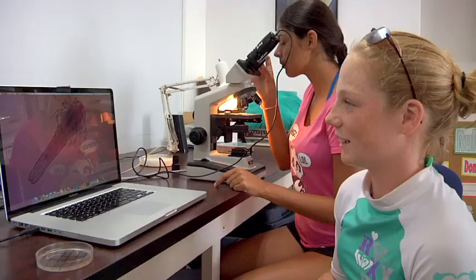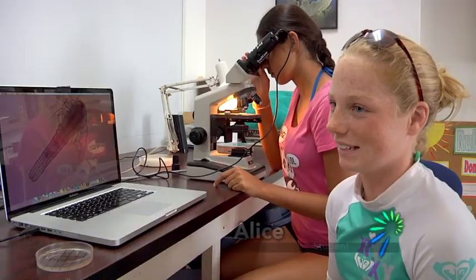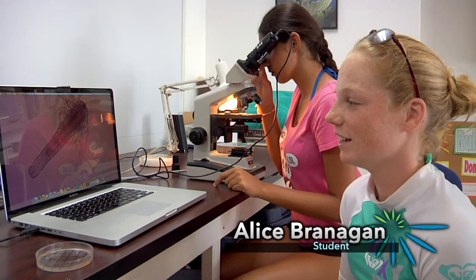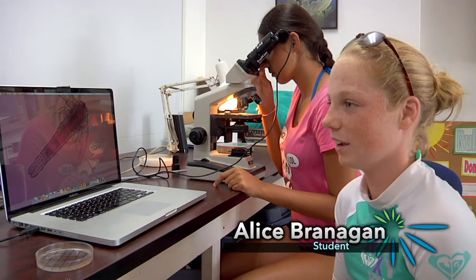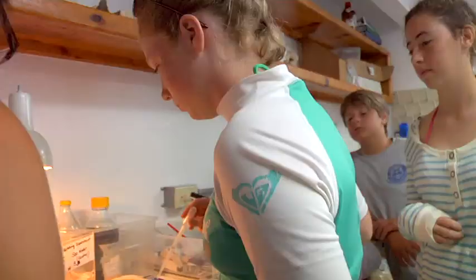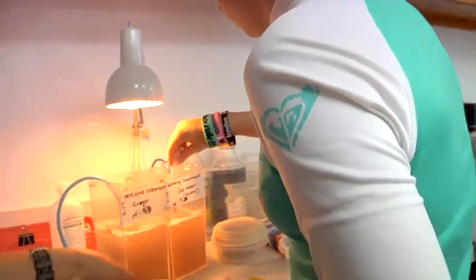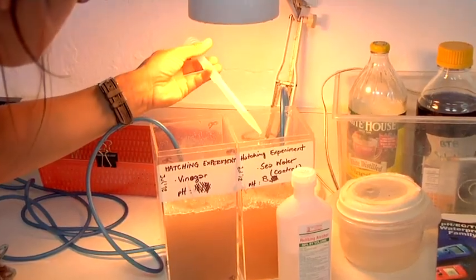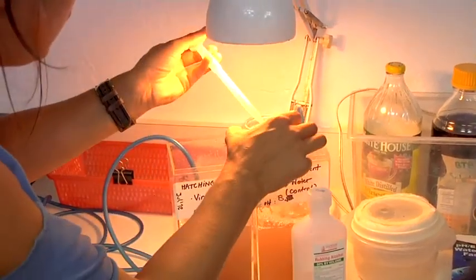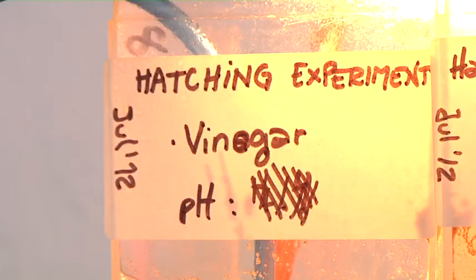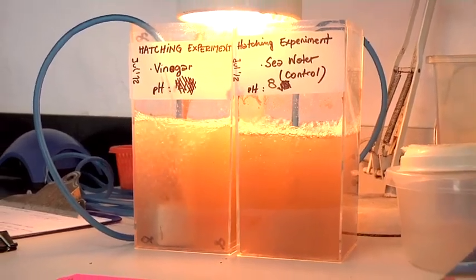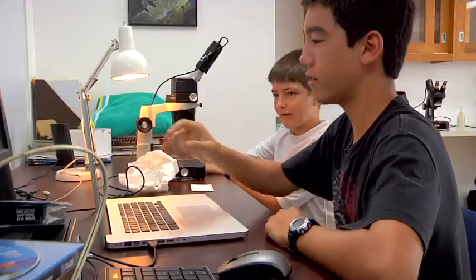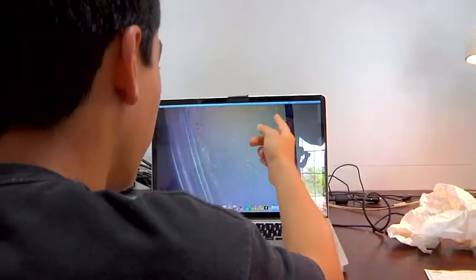We're doing an experiment to see how the acidity of the water in the ocean affects different life. We took two tanks of salt water in a controlled environment at the same temperature. We put unhatched zooplankton eggs in them, but one we filled with vinegar, which would simulate a higher acidic ocean.